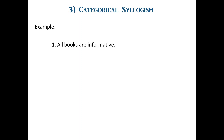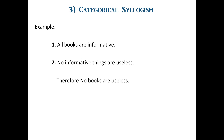Let us take an example. First premise: all books are informative. Second: no informative things are useless. Therefore, no books are useless. In this syllogism the three categorical propositions are: 'all books are informative,' 'no informative things are useless,' and 'no books are useless.' They are called categorical propositions because, as studied in chapter 3, a categorical proposition is a general proposition having two properties or two classes. All three here are general propositions, each having two properties.